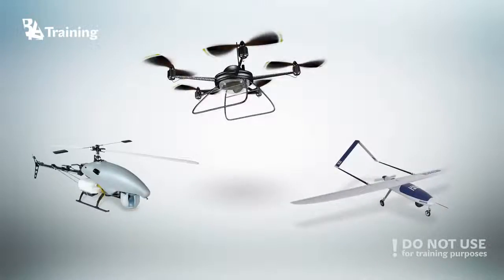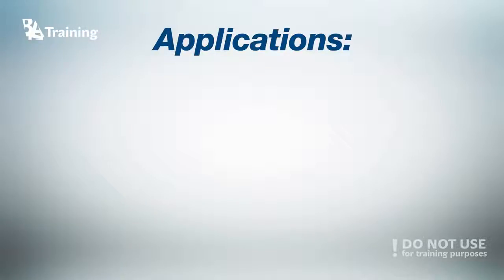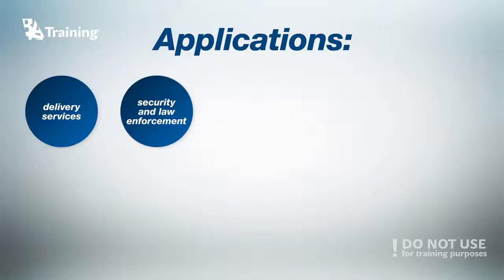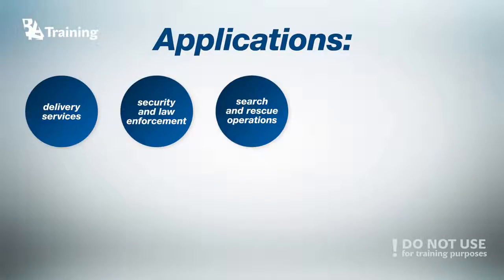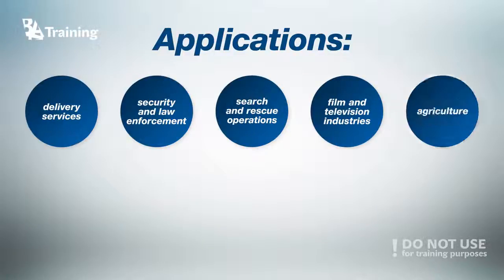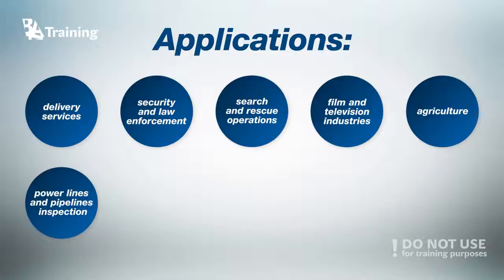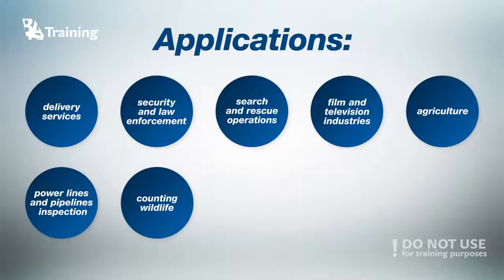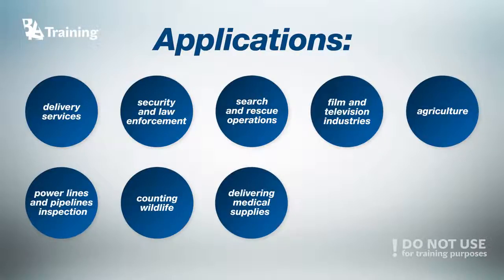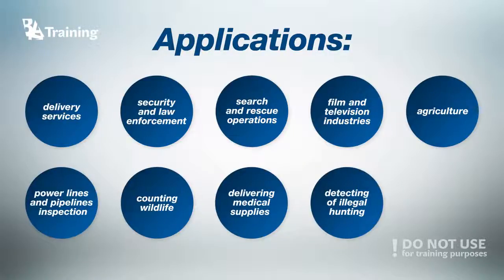Now you know the differences between all these types of drones, so let's talk about the practical uses of UAVs today. Used only in military and special operation applications in the past, drones are now increasingly finding uses in civil applications — widely used for common delivery services, security and law enforcement, search and rescue operations, film and television industries, agriculture, power lines and pipeline inspections, and more unusual activities like counting wildlife, delivering medical supplies to remote or otherwise inaccessible regions, and detecting illegal hunting, among many others.